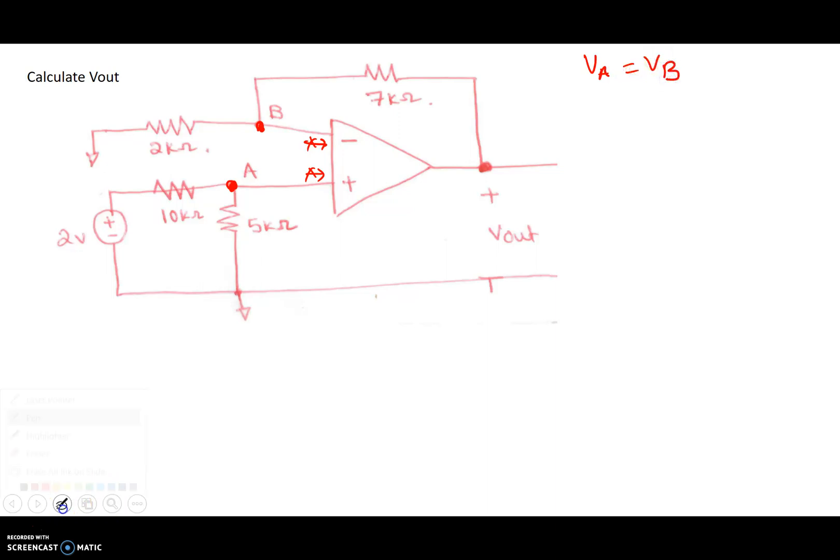Now in this particular case, let's start out by figuring out what VA is. VA can be found using a voltage divider because this voltage gets divided between the 5 kilo ohm and the 10 kilo ohm resistor, since no current actually goes through the non-inverting end of the amplifier.